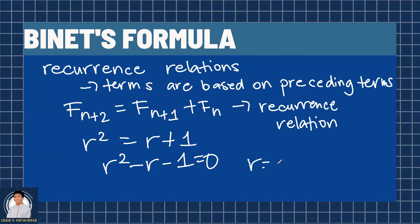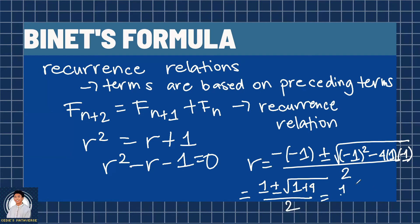R squared minus r minus 1 equals 0. Solving for r using the quadratic formula gives us negative negative 1, plus or minus, square root of negative 1 squared minus 4 times 1 times negative 1, all over 2. So we get 1 plus or minus square root of 5 all over 2. Does these two roots ring a bell? Exactly. They are the constants raised to the power of n from the Binet's formula. But how do we get the 1 over square root of 5?